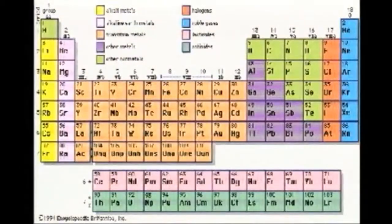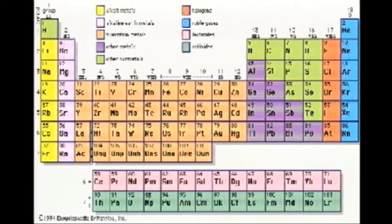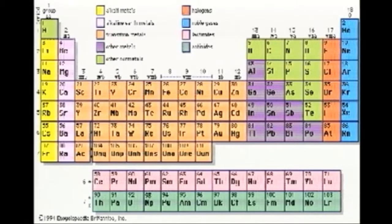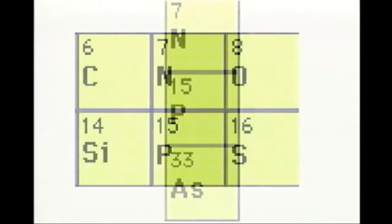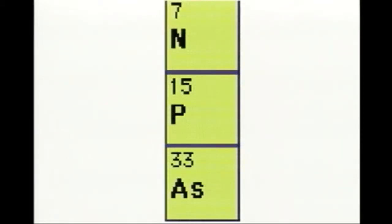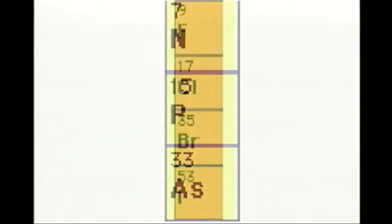This part of the talk is on those elements on the right-hand side of the periodic table — carbon, silicon, nitrogen, phosphorus, arsenic, oxygen, sulfur, and the halogen series.